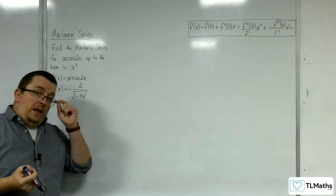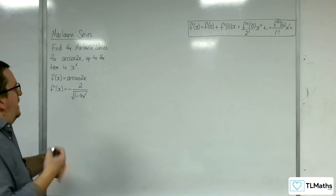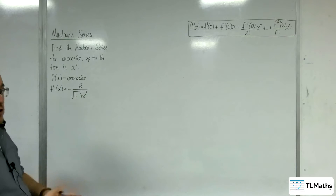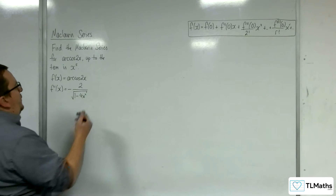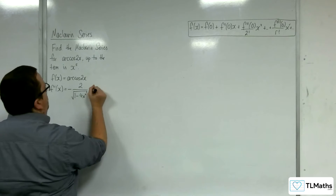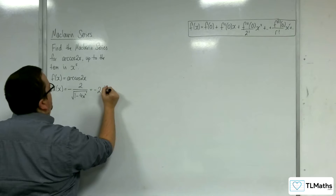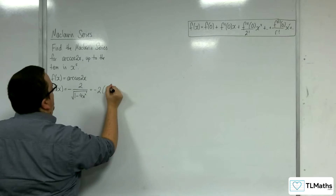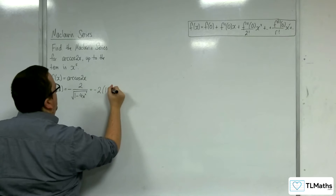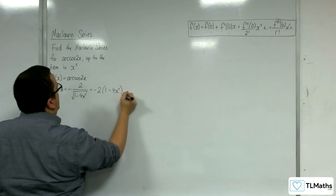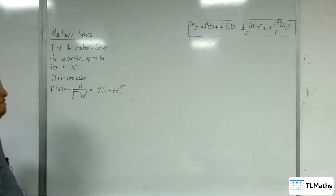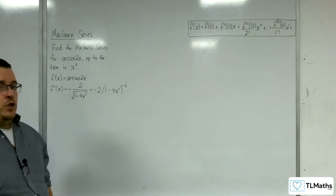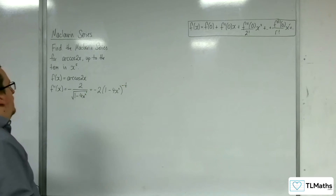Now, if you're thinking you need to differentiate this again, I'm going to rewrite this as minus 2 times (1 minus 4x squared) to the minus one half. I'm going to have to differentiate this several times.